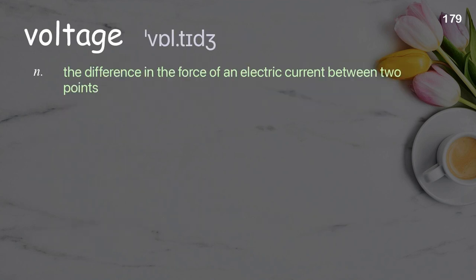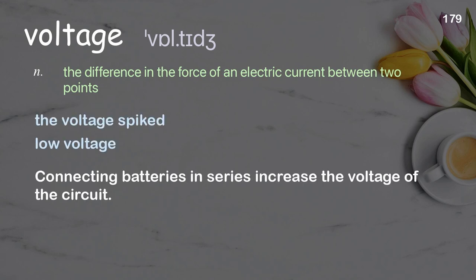Voltage: the difference in the force of an electric current between two points. Examples: the voltage spiked; low voltage; connecting batteries in series increases the voltage of the circuit.